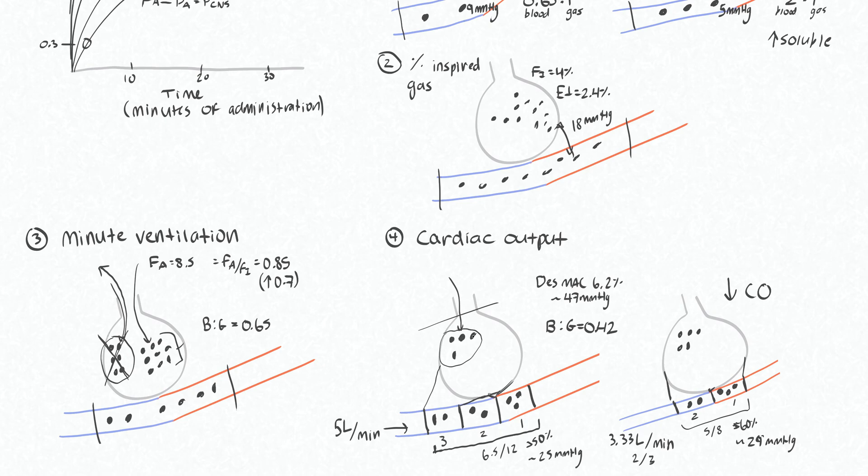And again, that's reflected in our fraction of alveolar gas that's left over. So here there is 3.5 that are left over, so your FA over FI is 0.33. And in this case, you have one, two, three, four, five particles left over, so your FA over FI is 0.5.